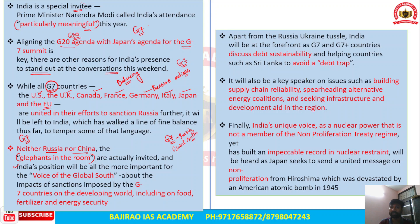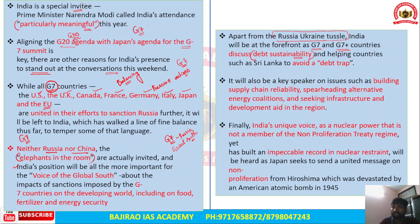India will be at the forefront as G7 and G7+ countries discuss debt sustainability, a major concern as more countries fall under the debt trap of nations like China, which has given unsustainable loans to Sri Lanka, Pakistan, Bangladesh, and Myanmar. India will also discuss helping countries like Sri Lanka avoid a debt trap, and will be a key speaker on building supply chain reliability, alternative energy coalitions, and infrastructure development aid.